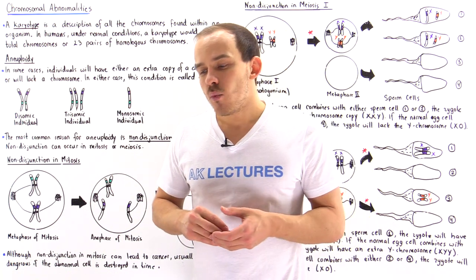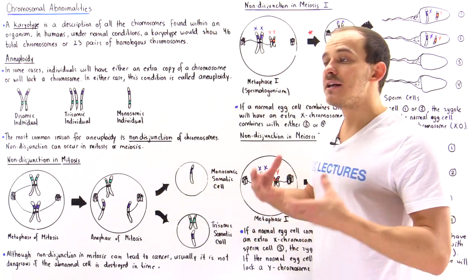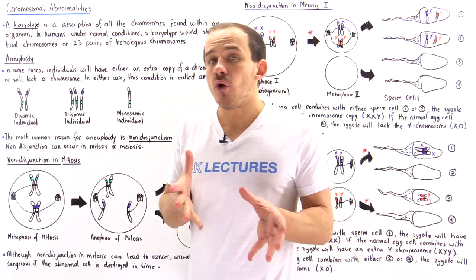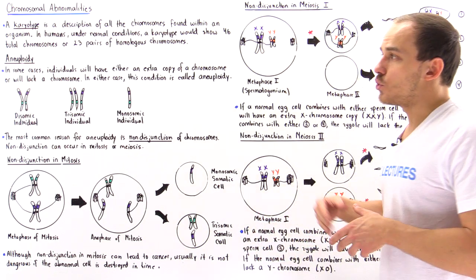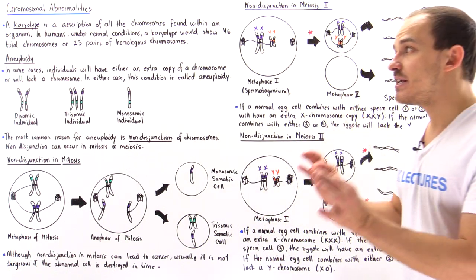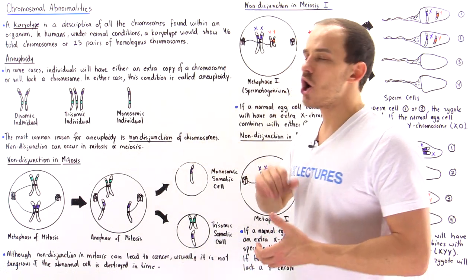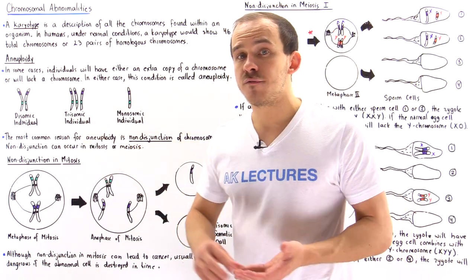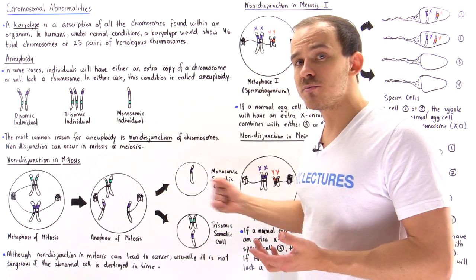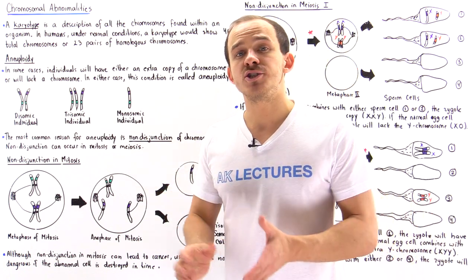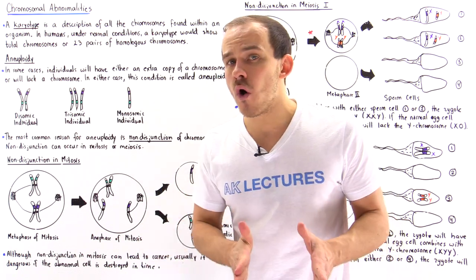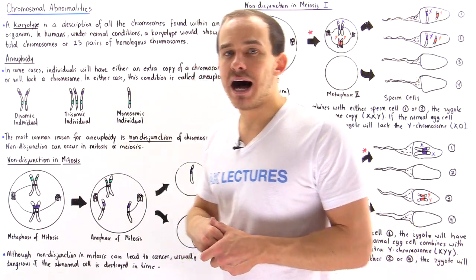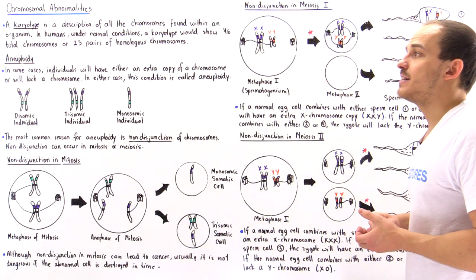Why exactly does aneuploidy actually take place? How does it arise? Well, there are two types of cell cycle processes: mitosis and meiosis. Both of these processes can actually lead to aneuploidy. The specific process that leads to aneuploidy is known as non-disjunction. The most common reason for aneuploidy is non-disjunction of chromosomes that takes place during anaphase of mitosis or during anaphase of meiosis. Let's begin by focusing on non-disjunction taking place in mitosis.